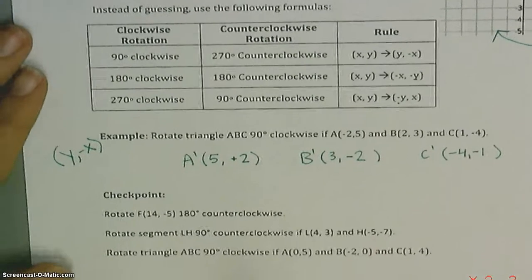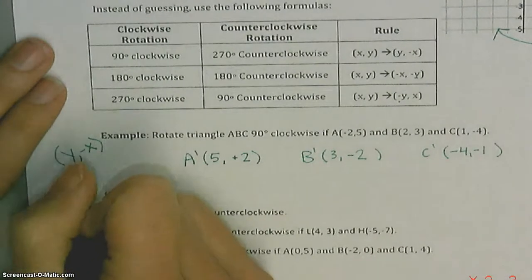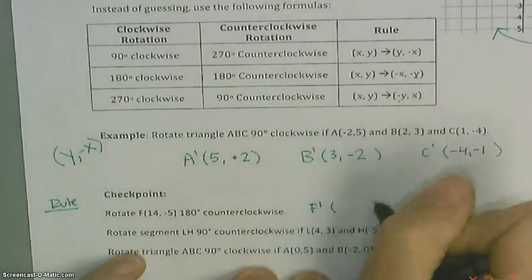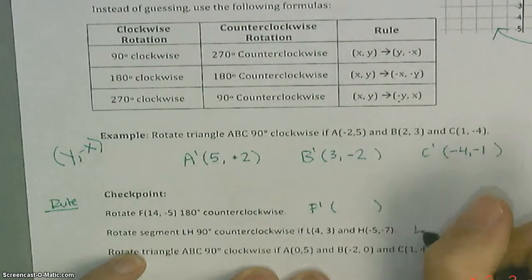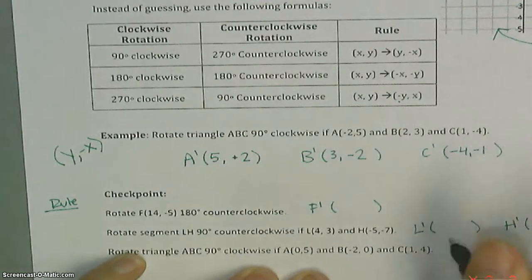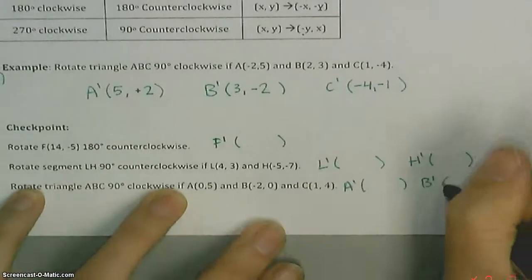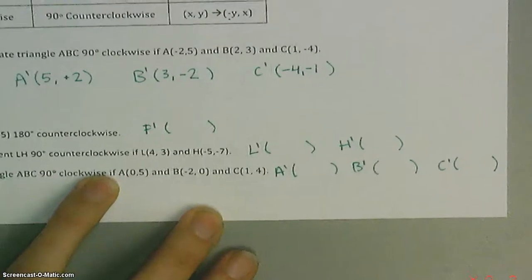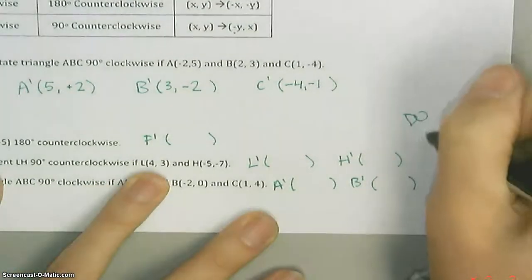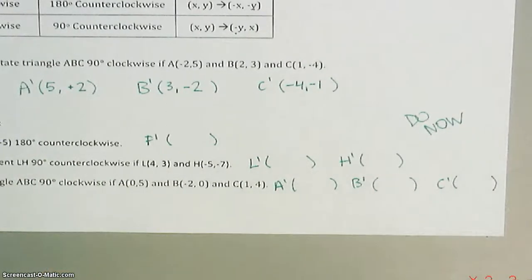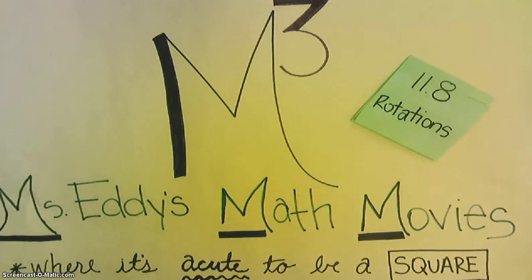Now I want you to try these. Write the rule, then give me your new points — where is F going to go, where's your new L, and where's your new H? Also give me your new A, B, and C. Do this now. This is M cubed, signing out.